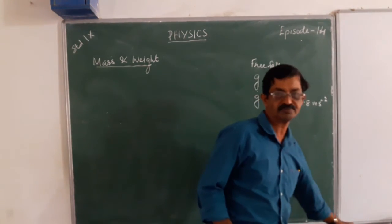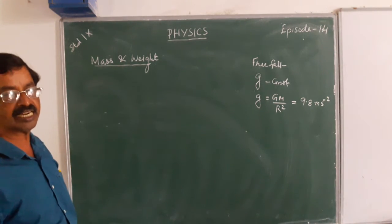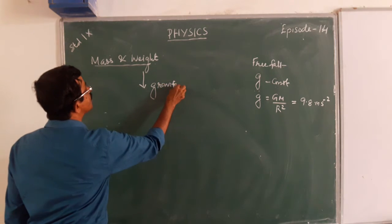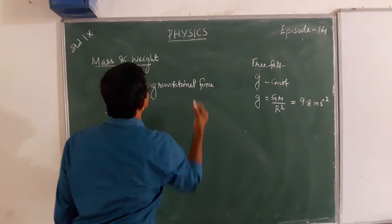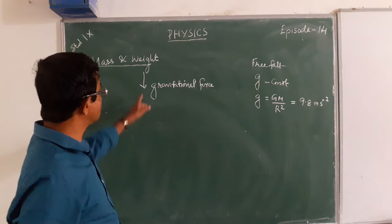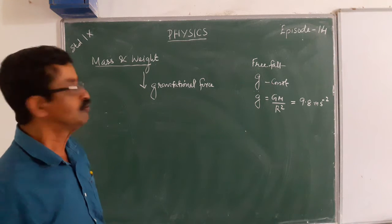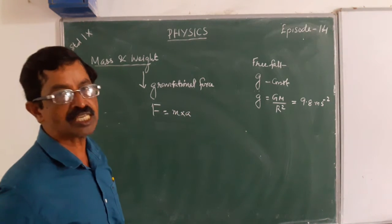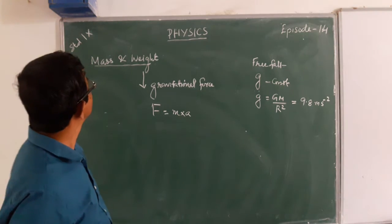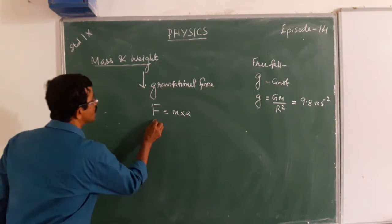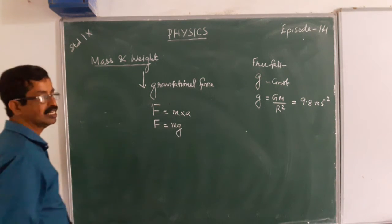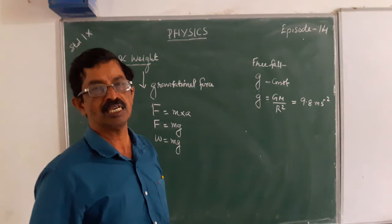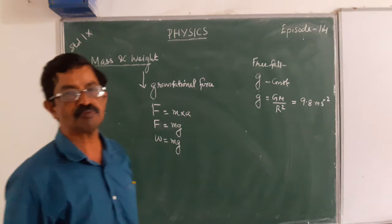Now, what is actually weight? For every body, Earth is attractive. That attractive force is called gravitational force. We know force is the product of mass and acceleration. In the case of gravitational force, F = mg. But this force is also the weight of the body, so W = mg.